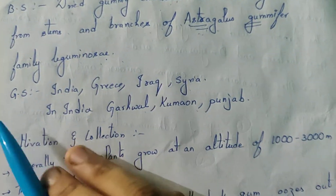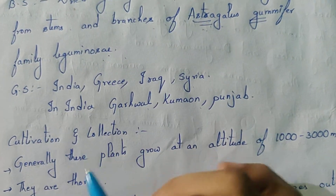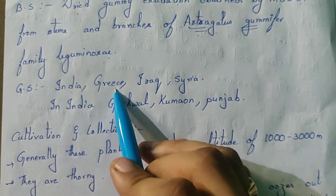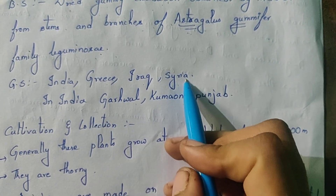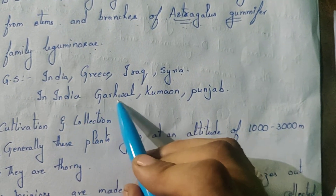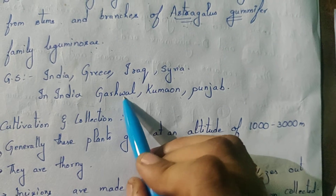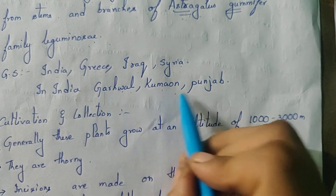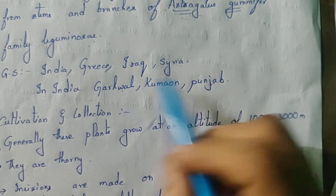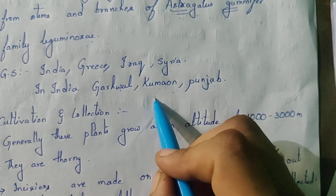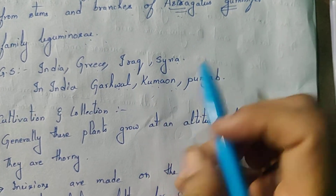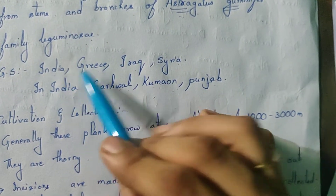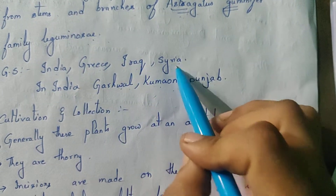Next, geographical source — where they are found. These are generally found in India, Greece, Iraq, and Syria. In India, these are found in Gharwal, Kumhaun, and Punjab. These are the three areas in India where the trees have been cultivated or found.